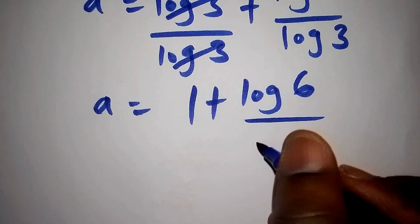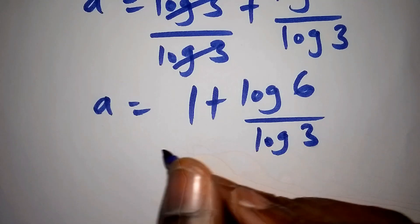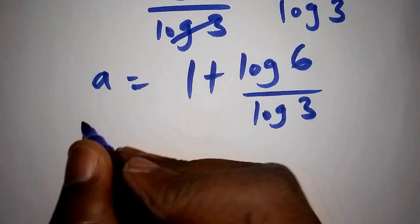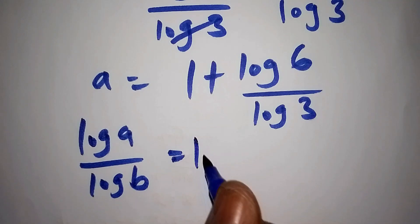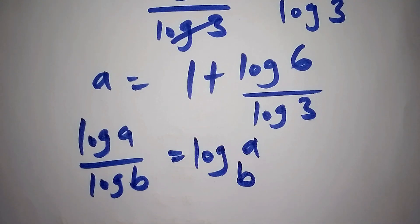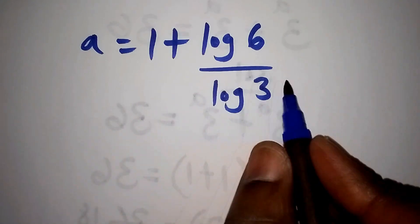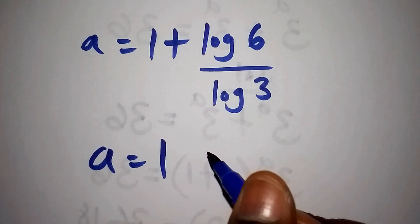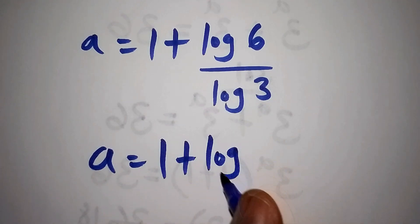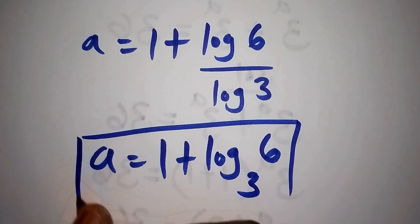Now, log of 6 all over log of 3 — recall that log of a over log of b can be written as log of a to the base of b. So our value a equals 1 plus log of 6 to the base of 3. This is our final answer.